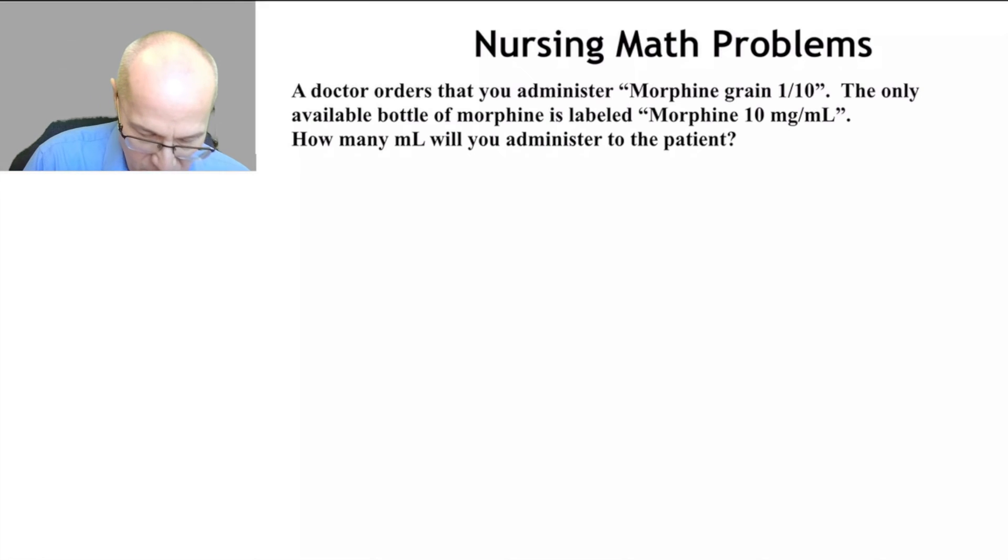So we have 1/10 of a grain. We're going to multiply that by something. Now this conversion factor here, 10 milligrams per milliliter of morphine, doesn't have grain in it. It doesn't use the unit grain, but it uses the unit milligram.